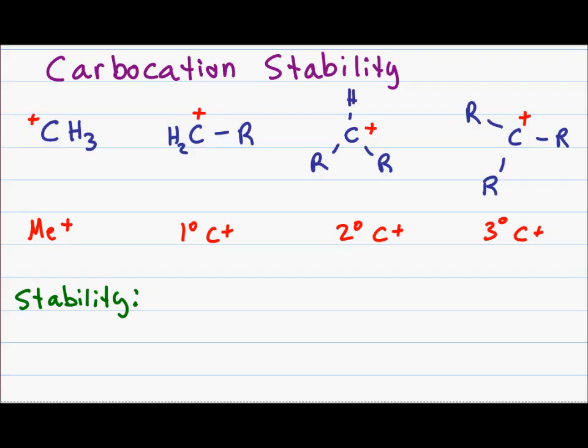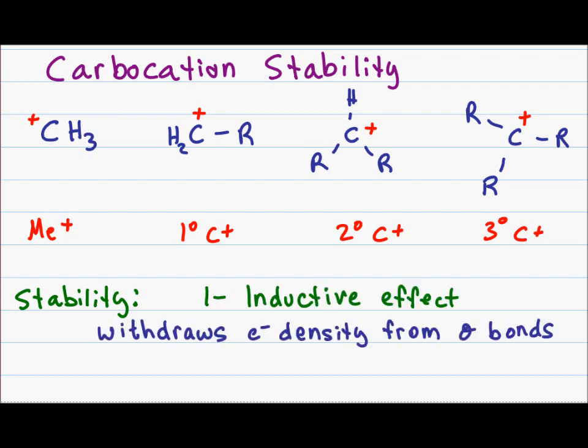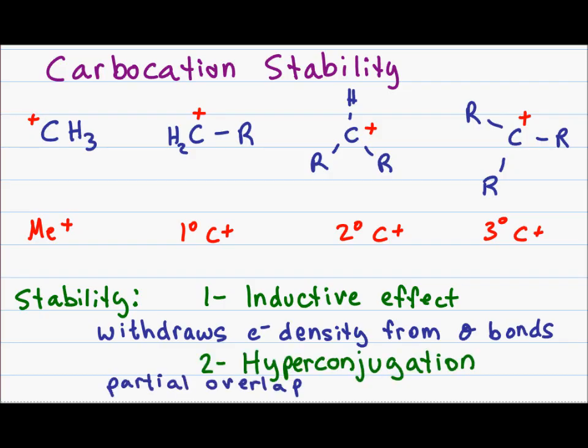When deciding which is the more stable carbocation, look at two important factors. The first is the inductive effect — almost like induced polarity. Carbon will try to steal some of the negativity from nearby sigma bonds. In doing so, those sigma bonds become slightly polar and take part of the positive charge, but the carbon holding the charge is now not as positive as it was previously. The second stabilizing factor is the partial overlap of nearby bonds. If the carbocation is attached to an R group, that R group's bonds are very close to the carbocation and stabilize it without actually giving it any electron density.